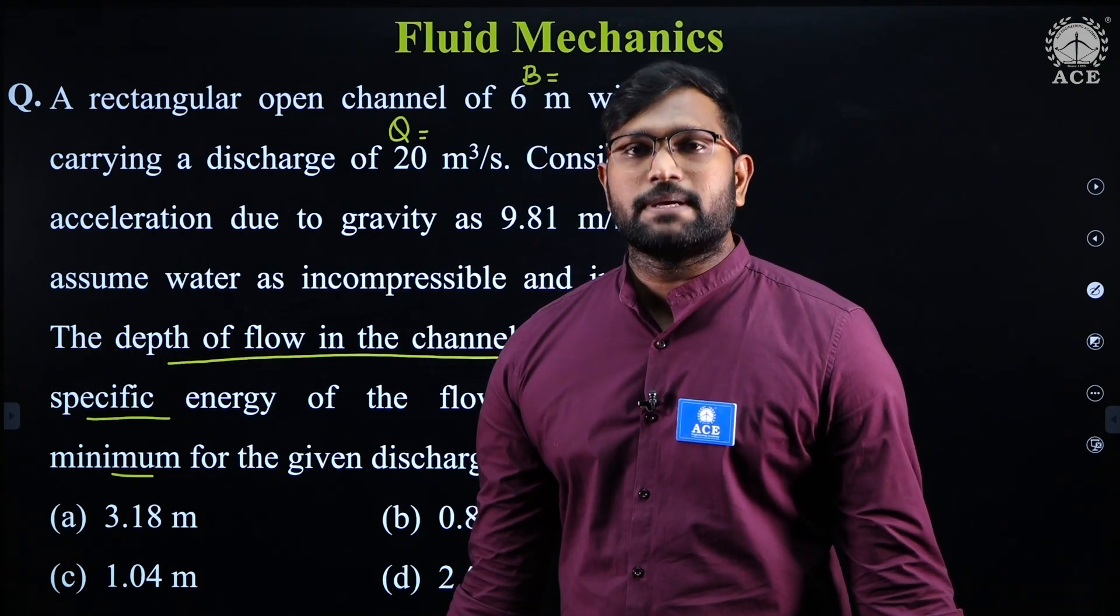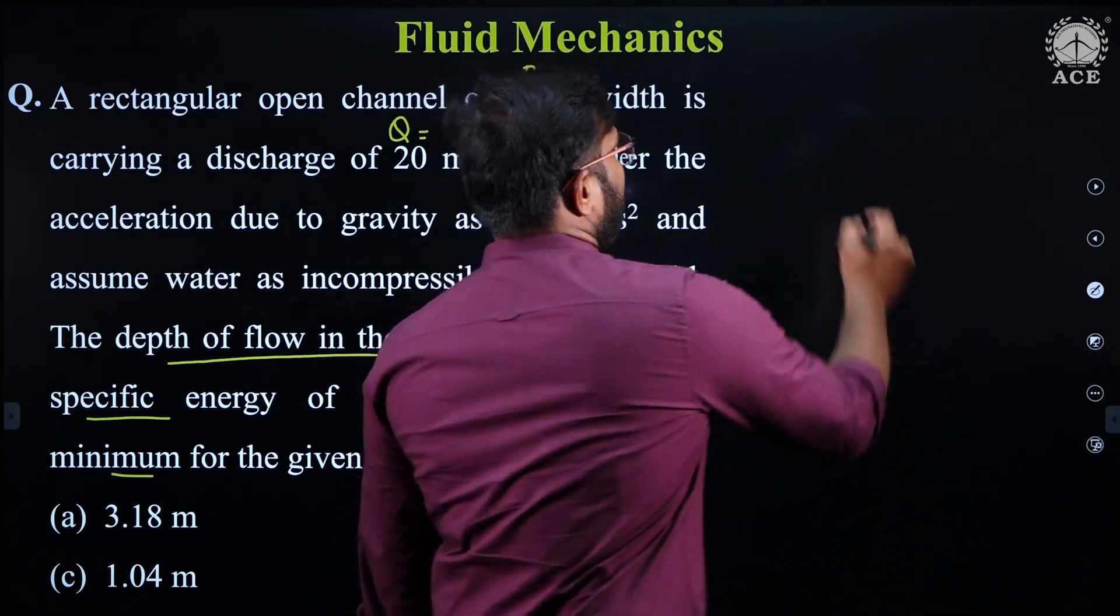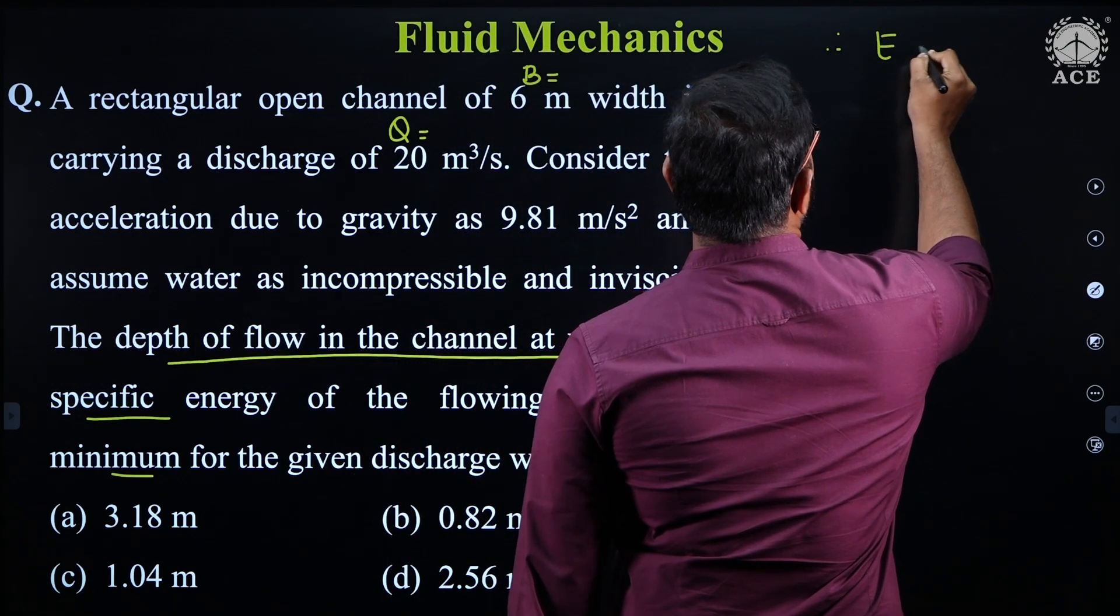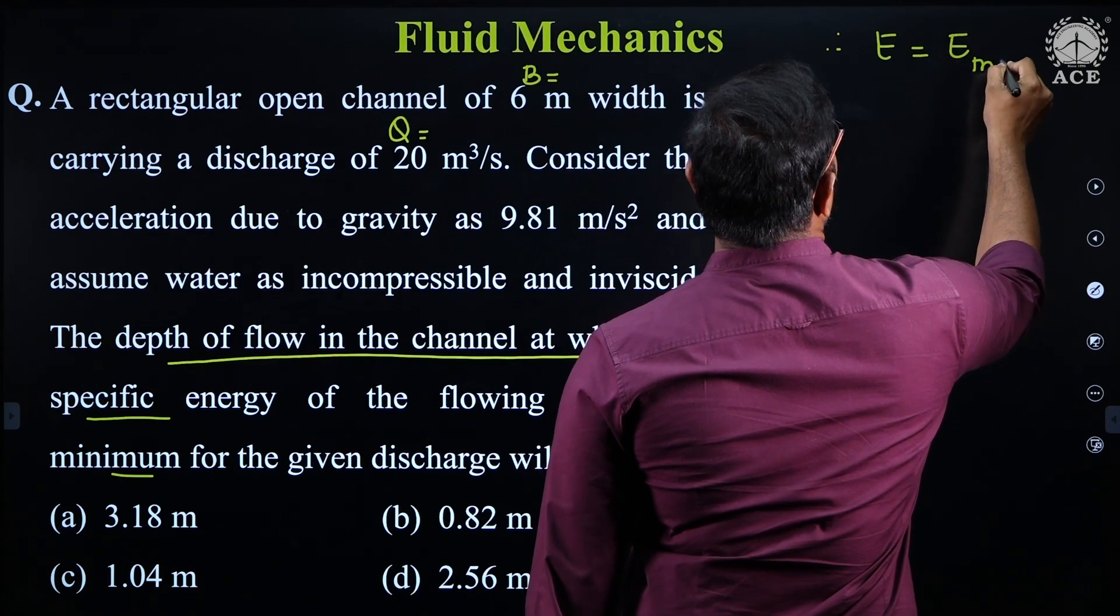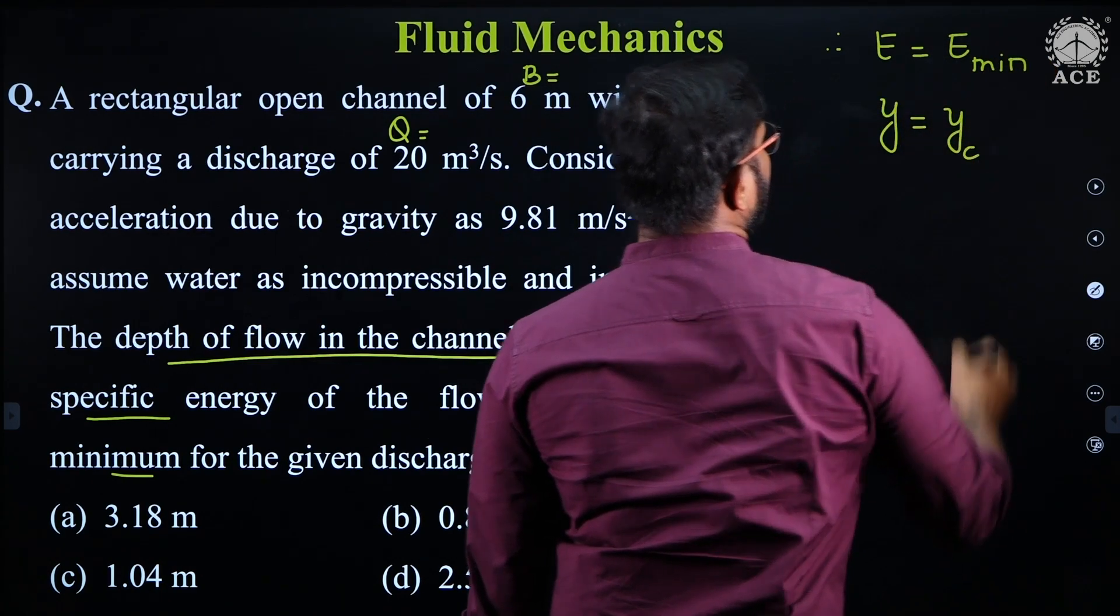Whenever the specific energy is minimum, the depth is nothing but critical depth. When specific energy equals E minimum, then the depth of flow is nothing but the critical depth.